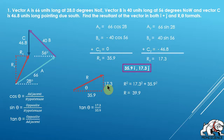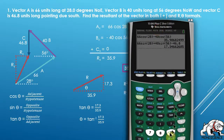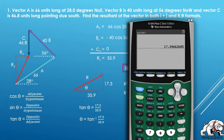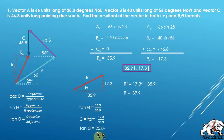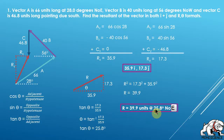The tangent of theta equals Ry over Rx, which is 17.3 divided by 35.9. To solve for theta, I take the inverse tangent (arc tangent) of that ratio on the calculator: arctan(17.3 / 35.9) = 25.8 degrees. So the final answer in r-theta format is 39.9 units at 25.8 degrees north of east — there's a typo in the video showing 'W' but it should be north of east.